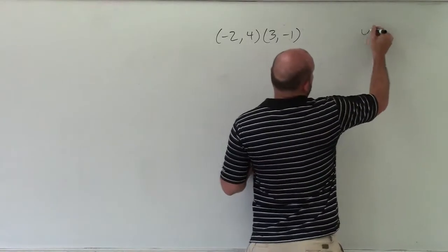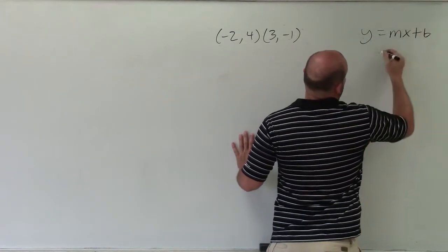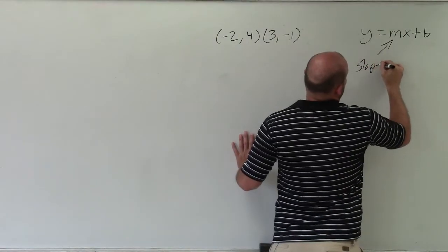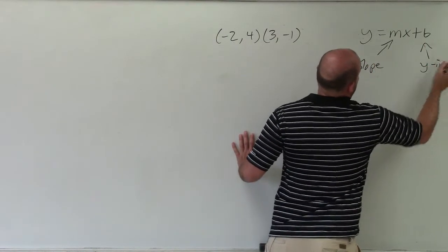Remember, slope-intercept form is y equals mx plus b, where m represents the slope and b represents your y-intercept.